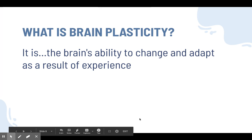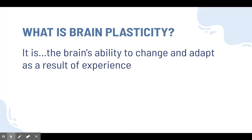So what is brain plasticity? You probably see the word 'plastic' in there. You may not think of plastic as something that's able to change, because usually when we see plastic it's hard. But plastic is something that you can mold, something you can melt and change into a different shape — and that's what we mean by brain plasticity. It's the brain's ability to change and adapt as a result of experience. Something happens and our brain has to respond to it, which is incredible.